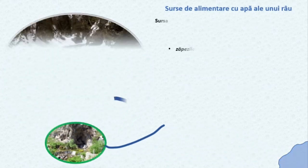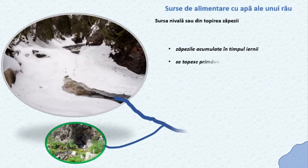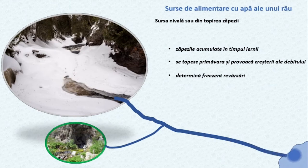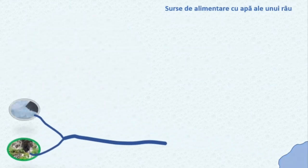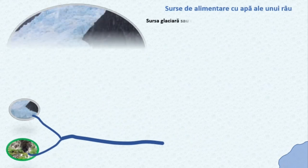Prin topirea zăpezilor acumulate iarna, în regiunile climatice temperate ale planetei, primăvara acestea se topesc și provoacă creșterea nivelurilor râurilor, urmată deseori de revărsări. Acest fenomen se poate întâmpla în zona temperată și în perioada iernii, situație ce poate declanșa unele fenomene periculoase.